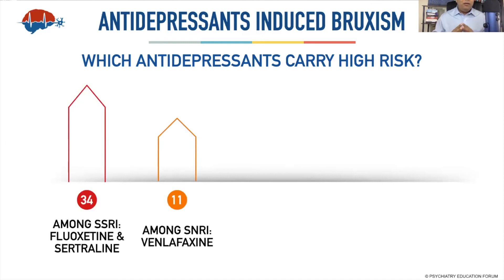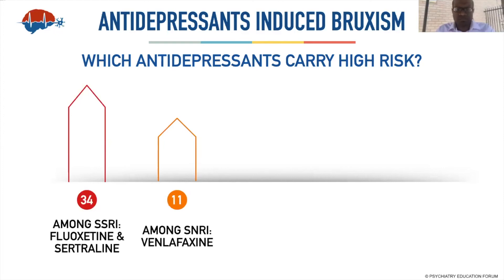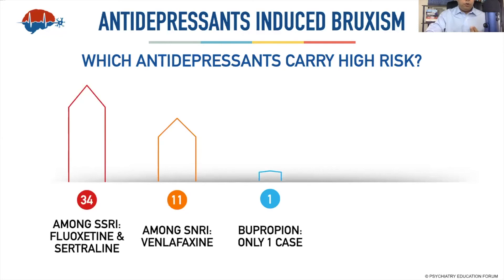Looking at the SNRI class — selective serotonin-norepinephrine reuptake inhibitors — we only found venlafaxine and duloxetine as the most common causes, with nine of eleven cases related to venlafaxine. A surprise finding was bupropion, which has mostly no effect on serotonin reuptake — we found one case related to the bupropion SR formulation. My thinking had been that bupropion should be safe since it should not cause serotonin neuron hyperactivity.